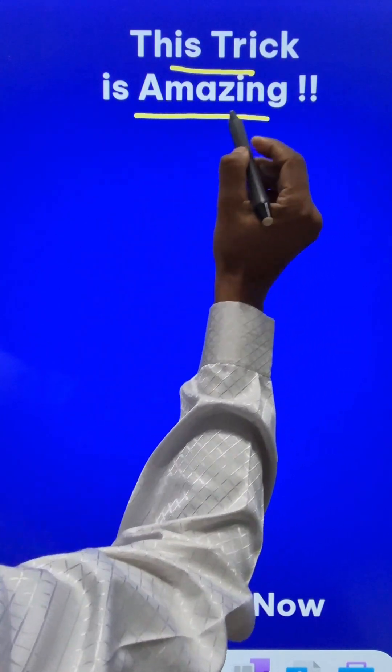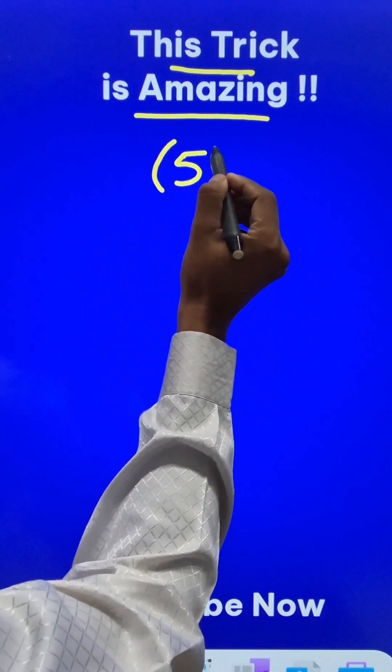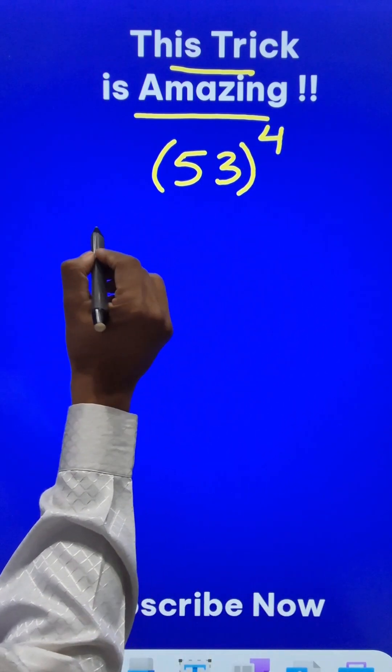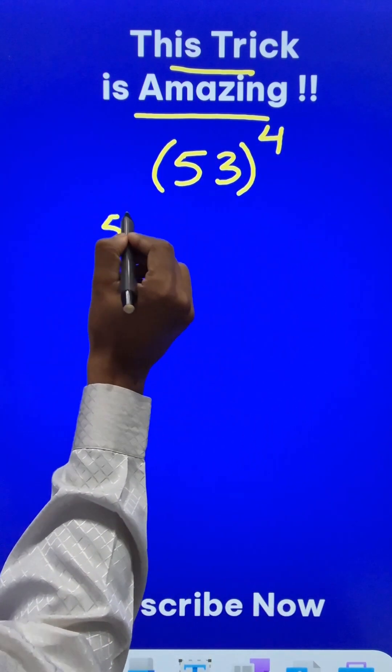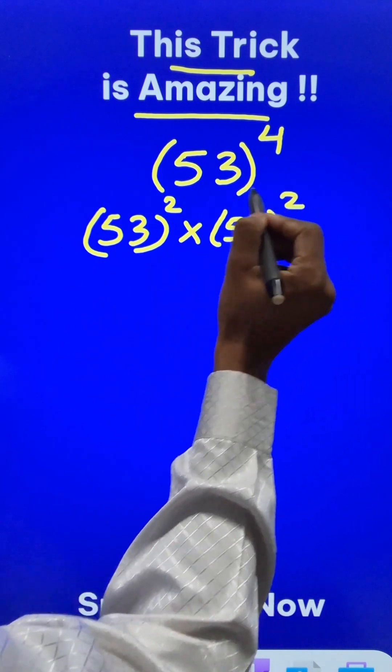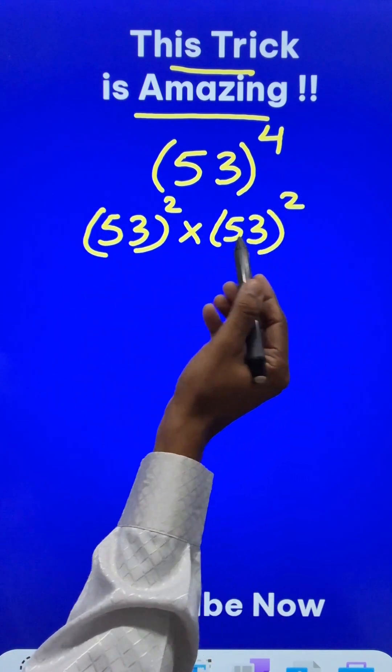Here is an amazing trick to find the 4th power of a 2-digit number. I am taking 53 as the base. So first of all, we all know that 53^4 is actually 53^2 times 53^2. So first we need to do 53 squared, for that we are going to use a short trick.